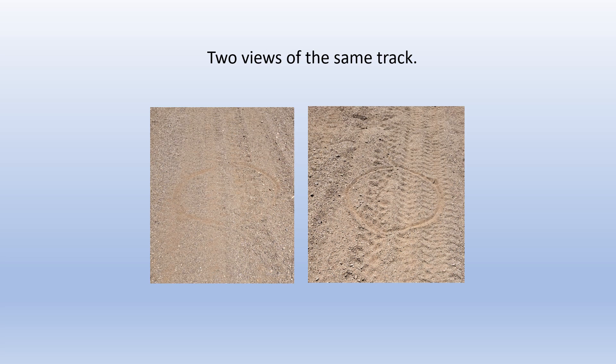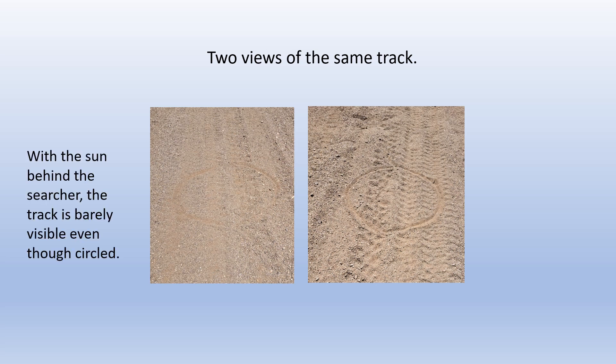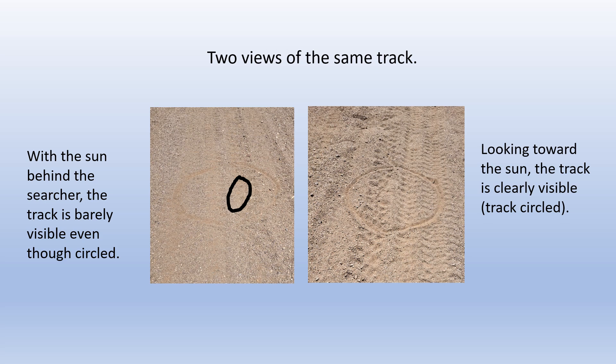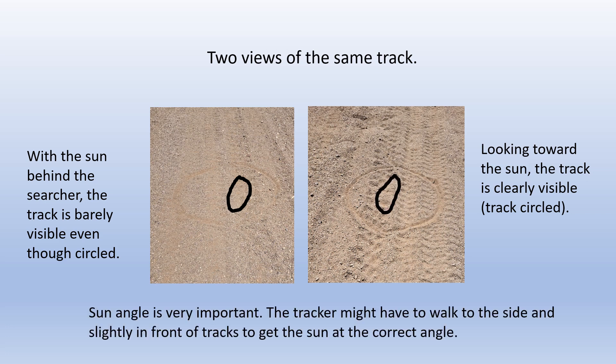Here are two views of the same track. With the sun behind the searcher, the track on the left is barely visible even though it's circled. Looking toward the sun, the track on the right is clearly visible. Sun angle is very important — the tracker might have to walk to the sides and slightly in front of tracks to get the sun at the correct angle.